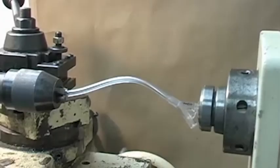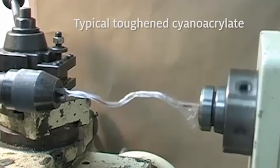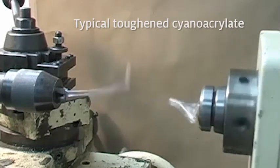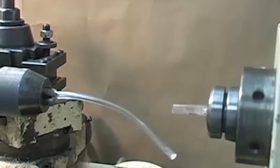Here we demonstrate through an extreme torsional test the typical strength of a traditional tough cyanoacrylate. You see that due to the adhesive's rigidity in the bond line, it fails at the tube connector interface with approximately four rotations.